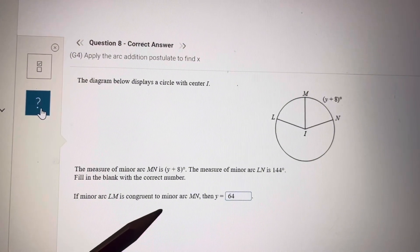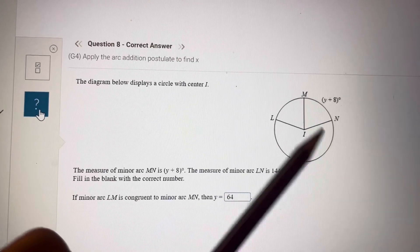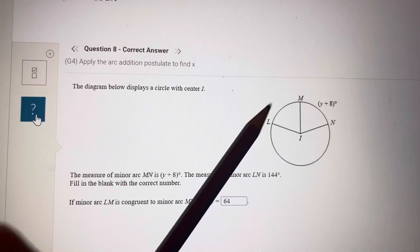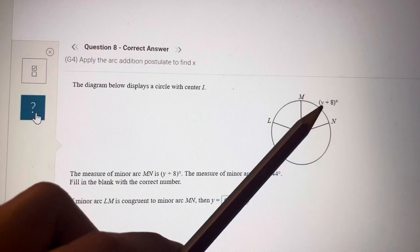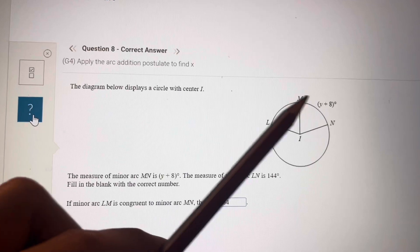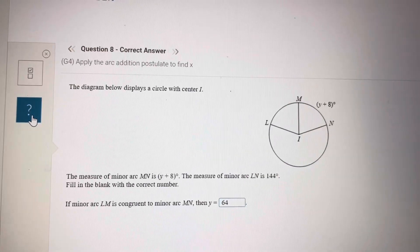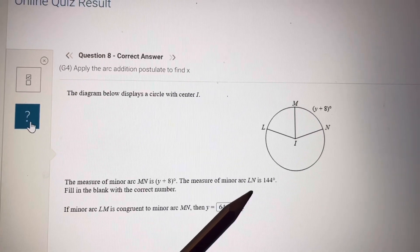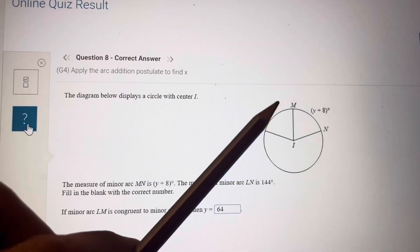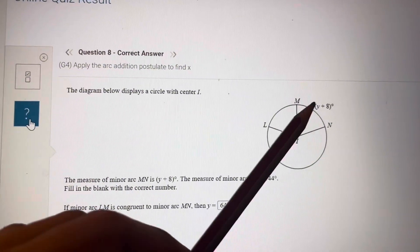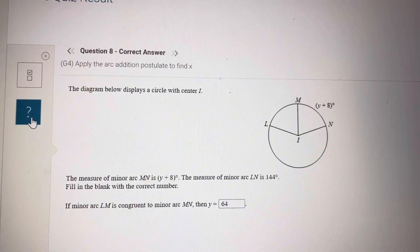If minor arc LN is congruent to MN. So this is equal to this. And I have all this. That means this plus this is equal to 144. So LM equal to MN equal to Y plus 8. And LM plus MN is equal to 144. So Y plus 8 plus Y plus 8 is equal to 144. Or you can say Y plus 8 is equal to half the 144.